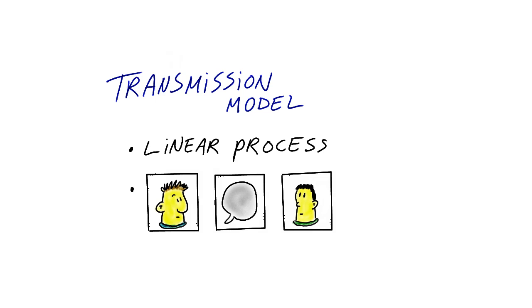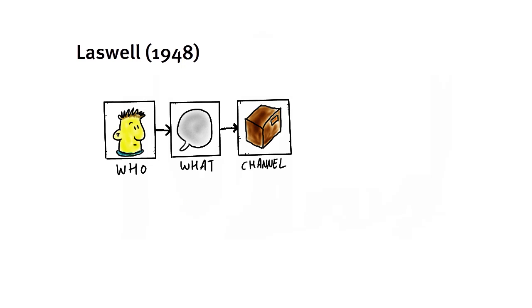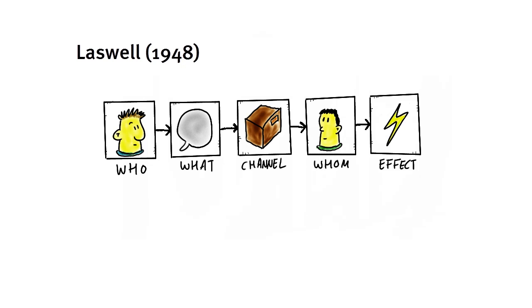Laswell, in 1948, made this model explicit. To understand the process of communication, according to Laswell, we need to consider who says what, in which channel, to whom, and with what effect.